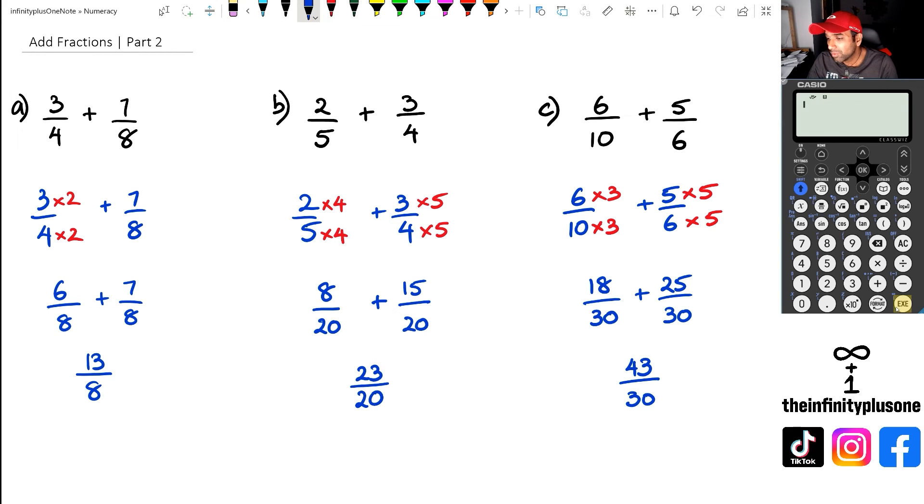Now, how do we use the calculator for this? Well, most of the calculators have some sort of fraction button. So that is usually this button right here. So we're going to go three, we're going to click on that bracket four. And we're going to click on plus seven fraction eight. And when I do this, as you can see, the answer is 13 over eight.